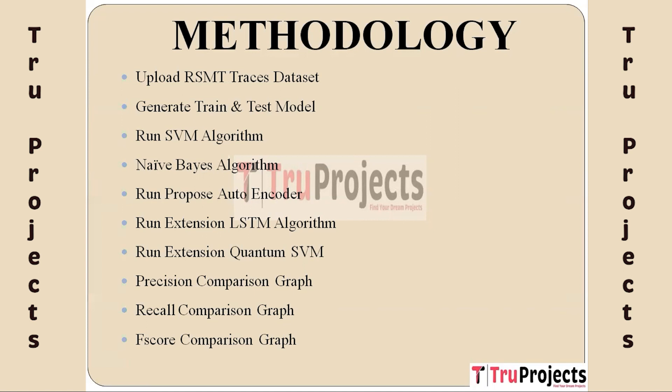The fifth module is run proposed autoencoder. The proposed autoencoder algorithm is a deep learning technique that aims to reduce the dimensionality of the data while preserving its important features. It is used to preprocess the raw RSMT traces into a more meaningful and compact representation. The encoded features are then fed into an autoencoder model for training, allowing the model to learn patterns of normal behavior and identify deviations as potential attacks.